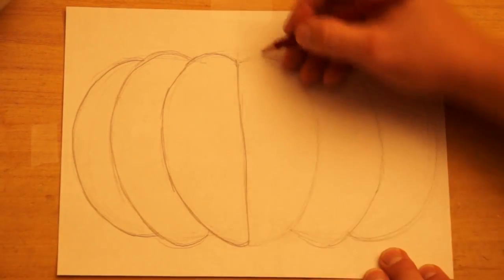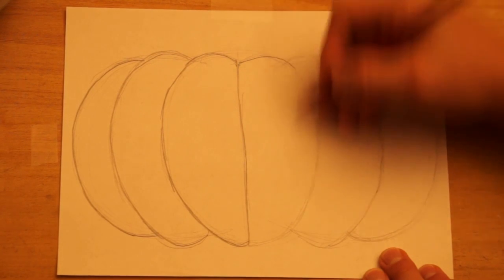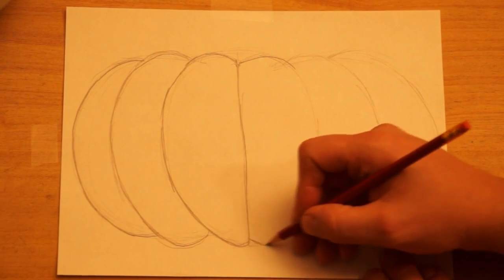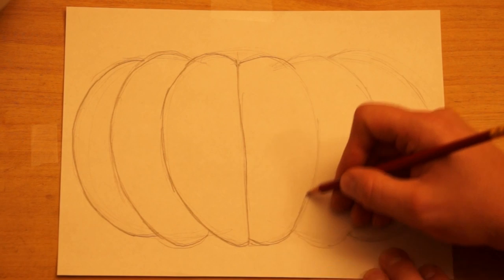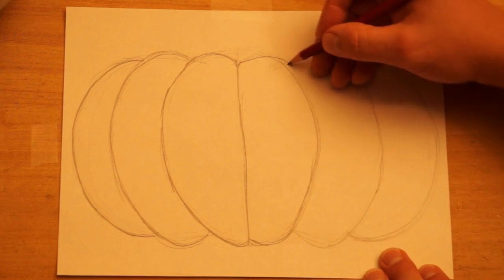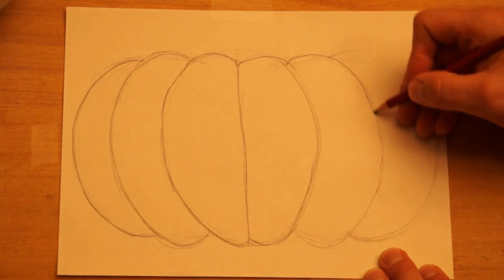Alright, we've got that half done. Now this half, I'm going to make this shape curve a little bit more at the bottom. Make this a little darker here.